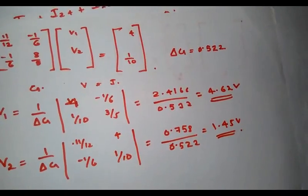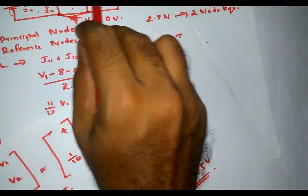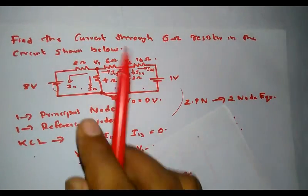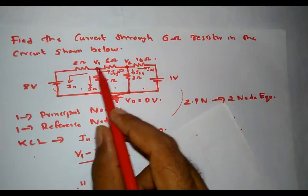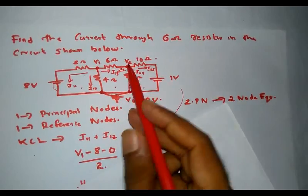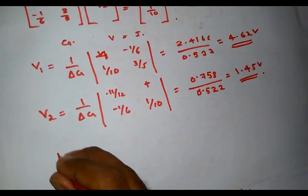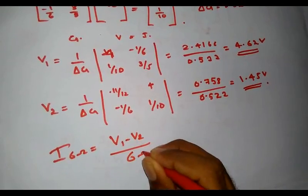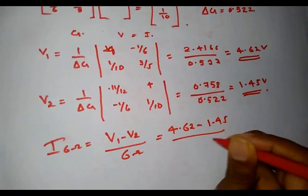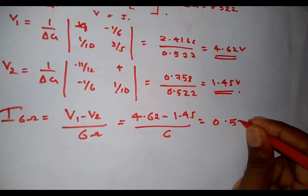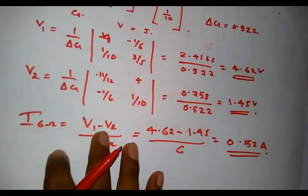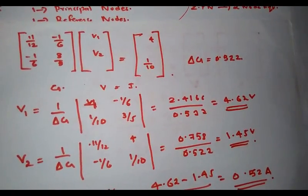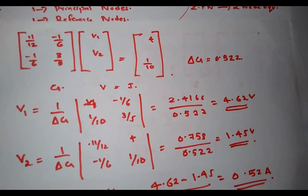By solving the two equations, I obtained V1 = 4.62V and V2 = 1.45V. The current through the 6Ω resistor is given by I₆Ω = (V1 − V2) / 6 = (4.62 − 1.45) / 6 = 0.52 amperes. This is the complete solution using nodal analysis. By determining V1 and V2, all branch currents in the circuit can be found. Nodal analysis is comparatively simpler than mesh analysis as it yields only two equations and two unknowns here.